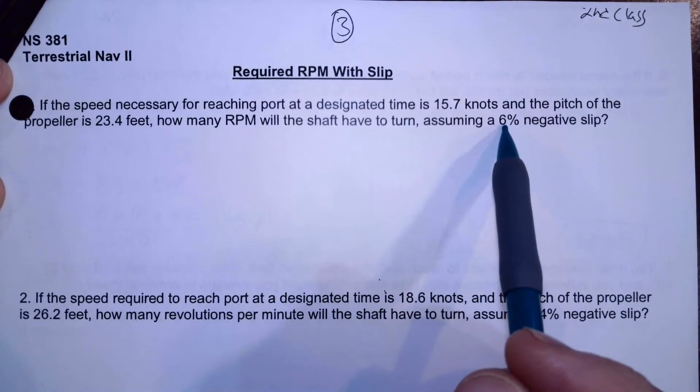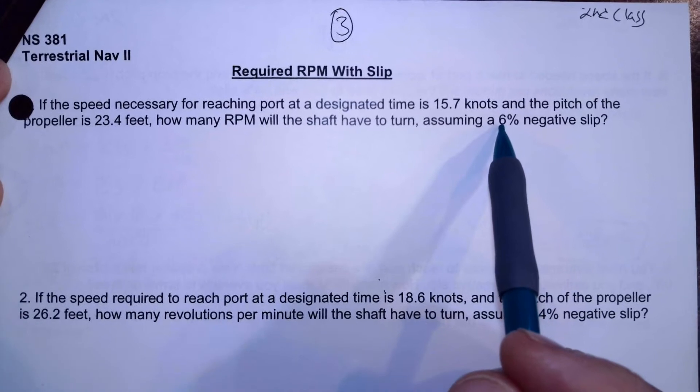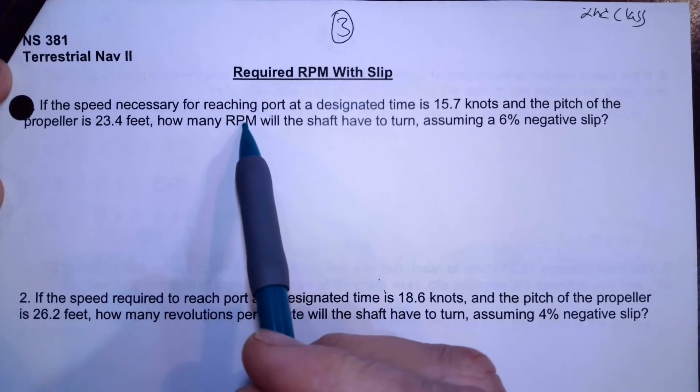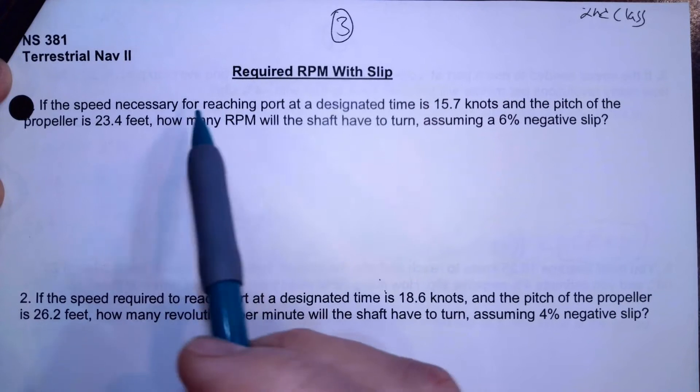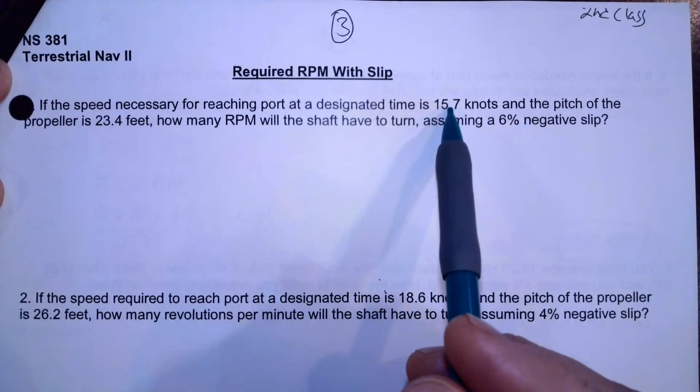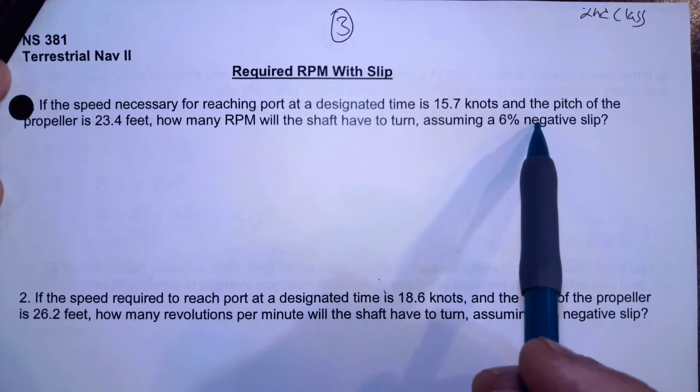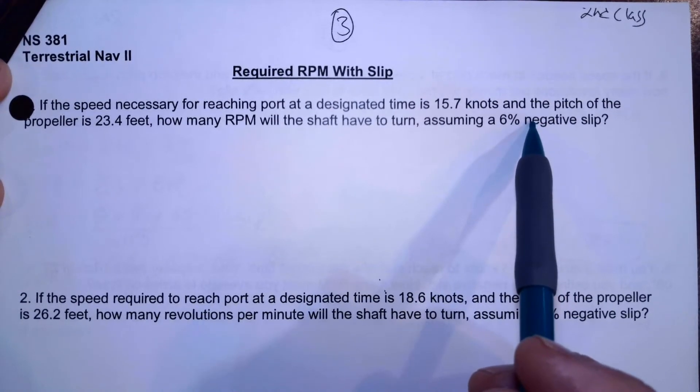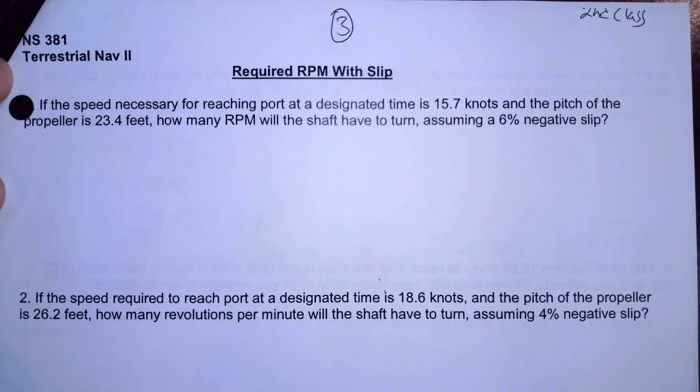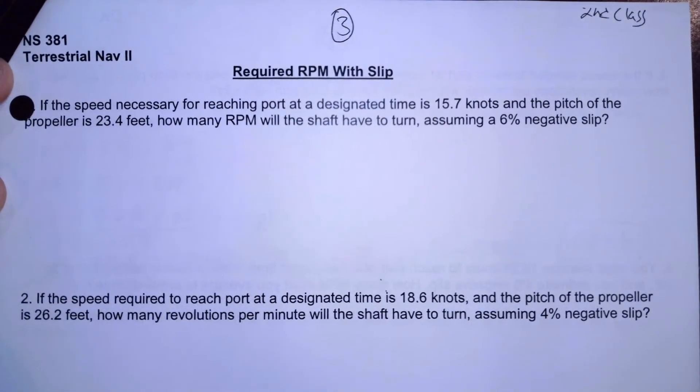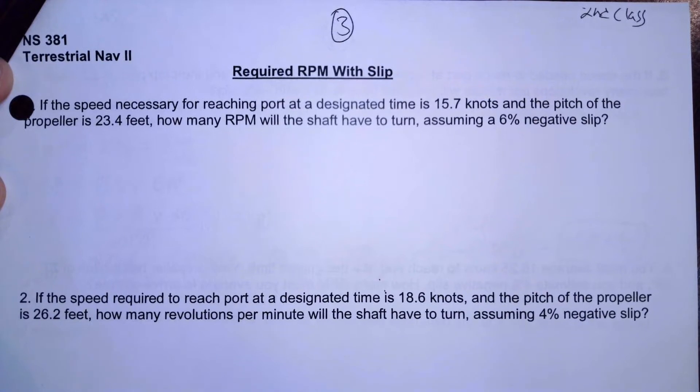So with this, we can calculate our efficiency. We have all the elements that we need to actually calculate what we should set our RPM at. So if we know that we want to make 15.7 knots, and we're performing pretty good, by a negative slip, we have a little bit of wind or current behind us. So we're doing better than expected - we're feeling pretty good about ourselves. We're actually gaining, we're not losing on our slip. But the question is, what should we set the RPM to?